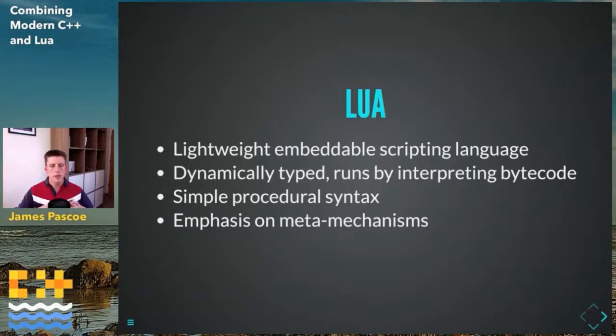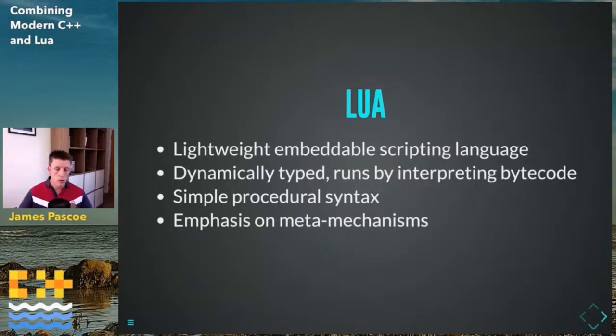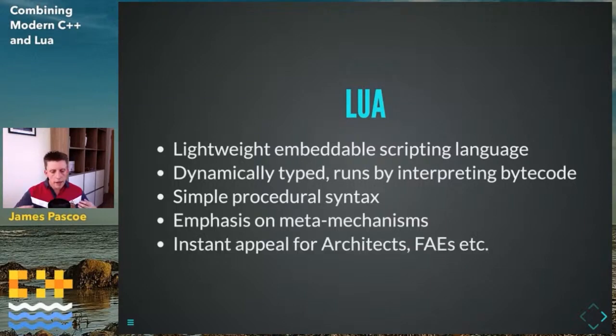The emphasis in Lua is on meta mechanisms, which keeps it small. Lua only really has one data structure: the table — essentially an associative array or map. The premise is that you can build any data abstraction on top of it: a list is just an associative array with keys one to n, an array is the same thing, and a tree is just a table of tables with left and right keys. This gives it instant appeal for architects, FAEs, and people like traders and quants.